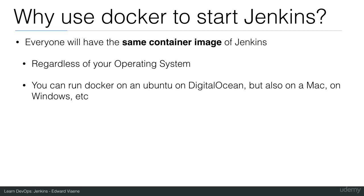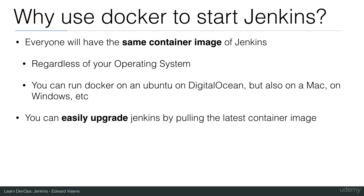You can run Docker on Ubuntu on DigitalOcean, as I showed you, but you can also run Jenkins in a Docker container on Mac, Windows, or anywhere else. You can easily upgrade Jenkins by pulling the latest container image — just pull the latest Jenkins image, start it, and you have the latest version with your data kept separately in a volume.